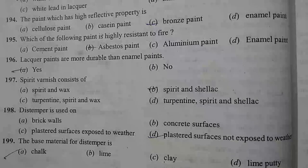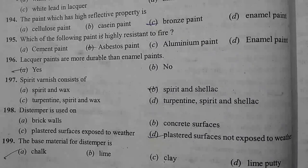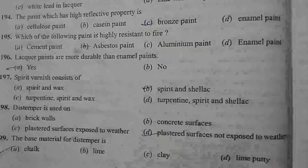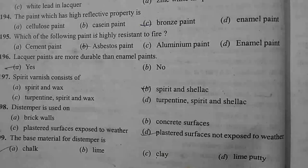Asbestos-based paint and alabaster paint are more durable than enamel paint. Spirit varnish consists of spirit and shellac. Distemper is used on plastered surfaces not exposed to weather. The base material for distemper is chalk.